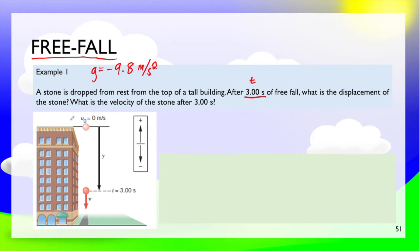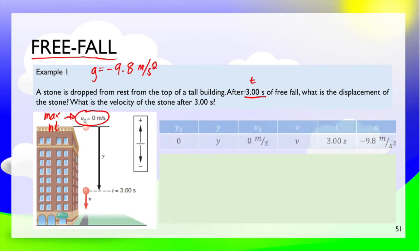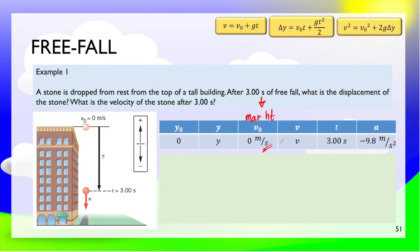This is something you should remember: when we're dropping from a certain height, at the maximum height, the velocity should always be zero. So therefore, our given includes: at the maximum height, the velocity is zero.